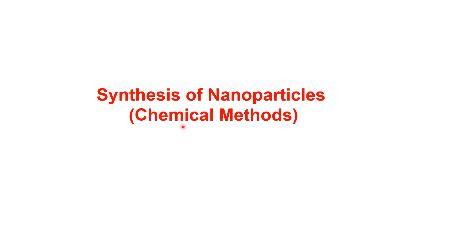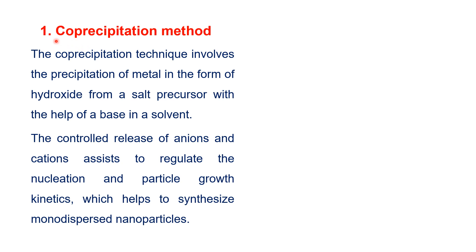Synthesis of nanoparticles through chemical methods. The first chemical method is co-precipitation. This technique involves the precipitation of metal in the form of hydroxide from a salt precursor with the help of a base in a solvent. The base produces the hydroxide and the metal is formed from the salt precursor, producing a metal hydroxide that proceeds through nucleation, particle growth, drying, and calcination to produce the nanoparticle.